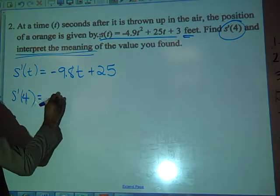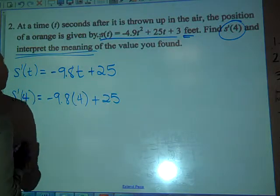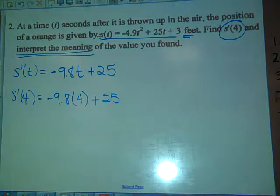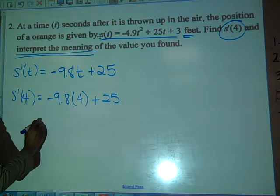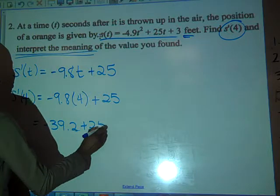So we have negative 9.8 times 4 plus 25. What do you get? Negative 39.2 plus 25 equals negative 14.2.